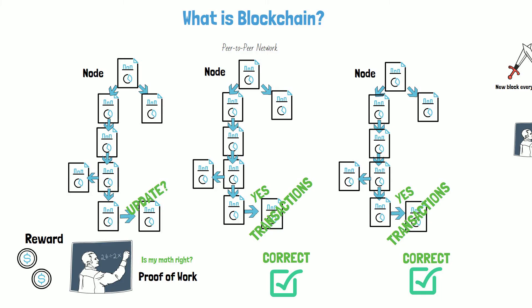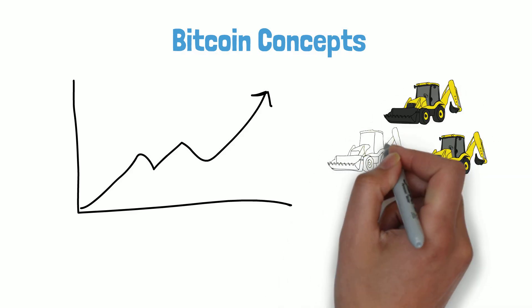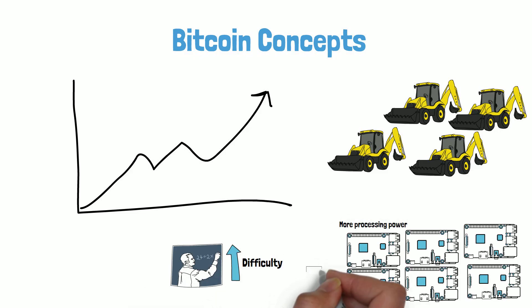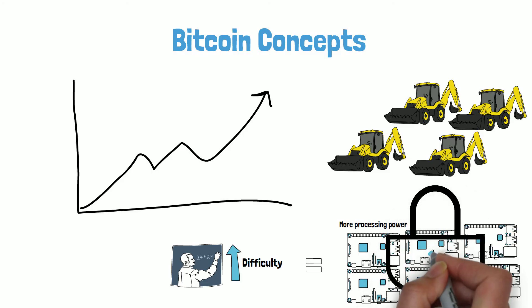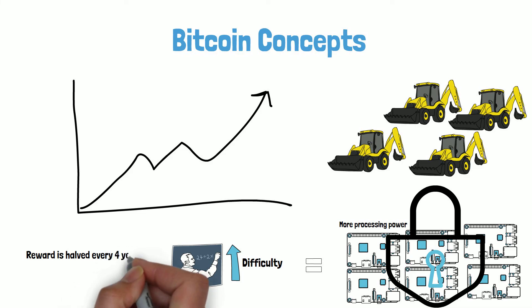A miner submits a solution to the math problem — the proof of work. The others check that the solution is correct, and if the majority vote correct, the new block of transactions is added to the blockchain. As more people want to use Bitcoin, the price rises and more people will want to mine. Bitcoin will raise the difficulty of mathematical problems and the processing power needed to unlock the mining rewards, to ensure blocks will continue to take around 10 minutes to be produced. Each block contained a reward of 50 coins in the first 4 years, halved to 25 coins in the next 4 years, and halved every 4 years after that.